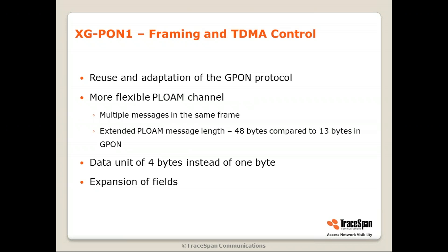In terms of framing and TDMA control, XG-PON 1 reused and adapted the G-PON protocol, so the principles were very similar. Some enhancements include a more flexible PLOAM channel — multiple messages can appear in the same frame, whereas G-PON only allows one. The PLOAM message length was extended to 48 bytes compared to 13 bytes in G-PON, the data unit is 4 bytes instead of 1, and some fields were expanded to give more options.